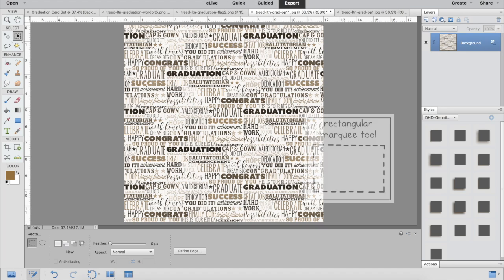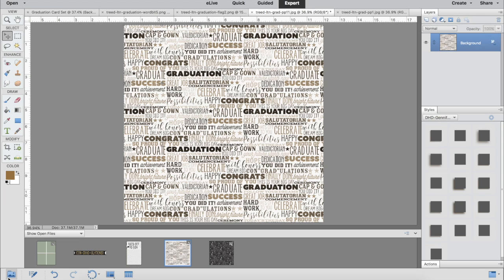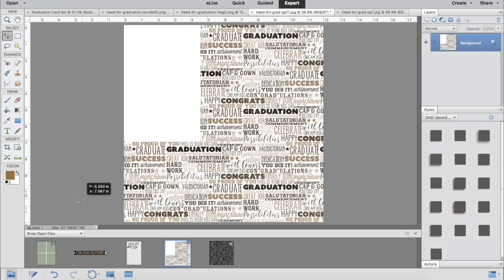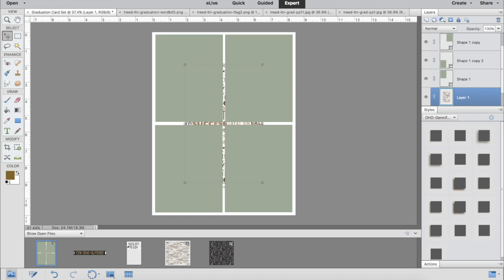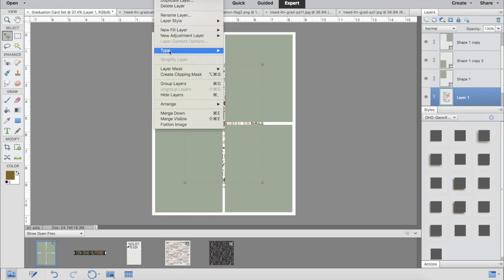I'm going to take that rectangular marquee tool and cut out a piece of that paper and drag it down onto my 8.5 by 11 paper. Since that came in behind, I'm going to go to Layer, Arrange, and Bring to Front.